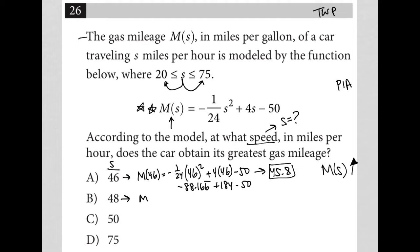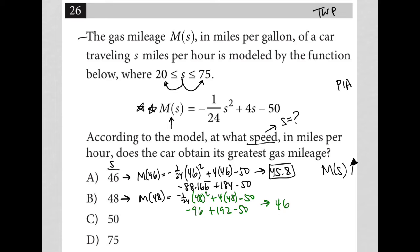Let's see what happens if I use 48, choice B — see if there's a trend as S gets larger. M of 48 equals negative 1/24 times 48 squared plus 4 times 48 minus 50. So 48 squared divided by negative 24 is negative 96. Then 4 times 48 equals 192, so plus 192 minus 50. Negative 96 plus 192 minus 50 equals 46. So B is better than A.